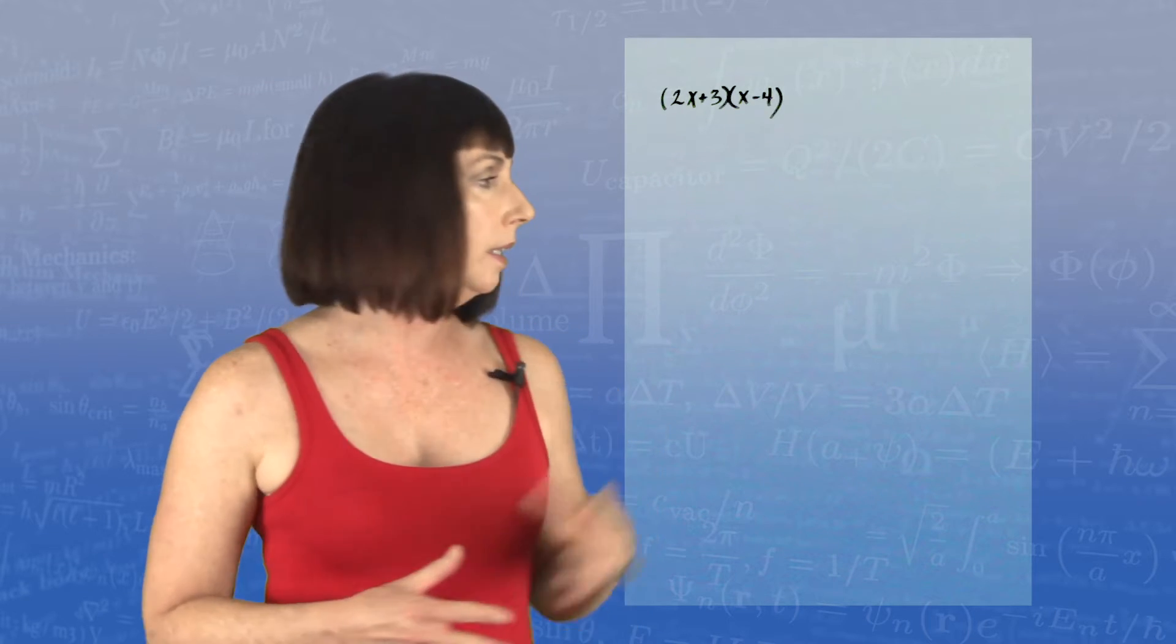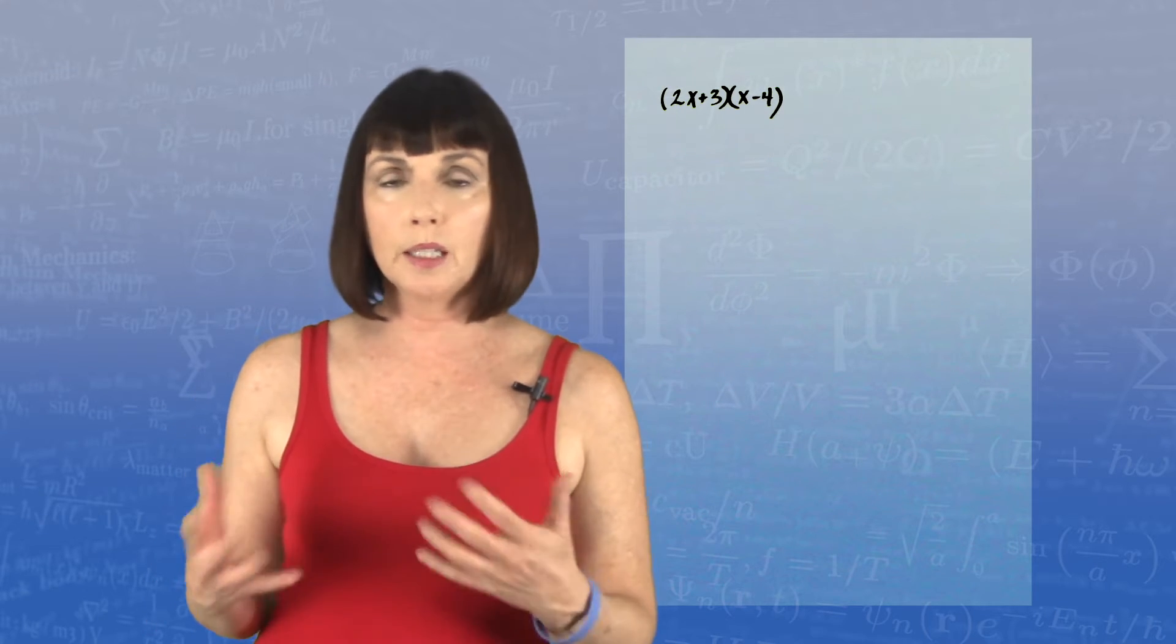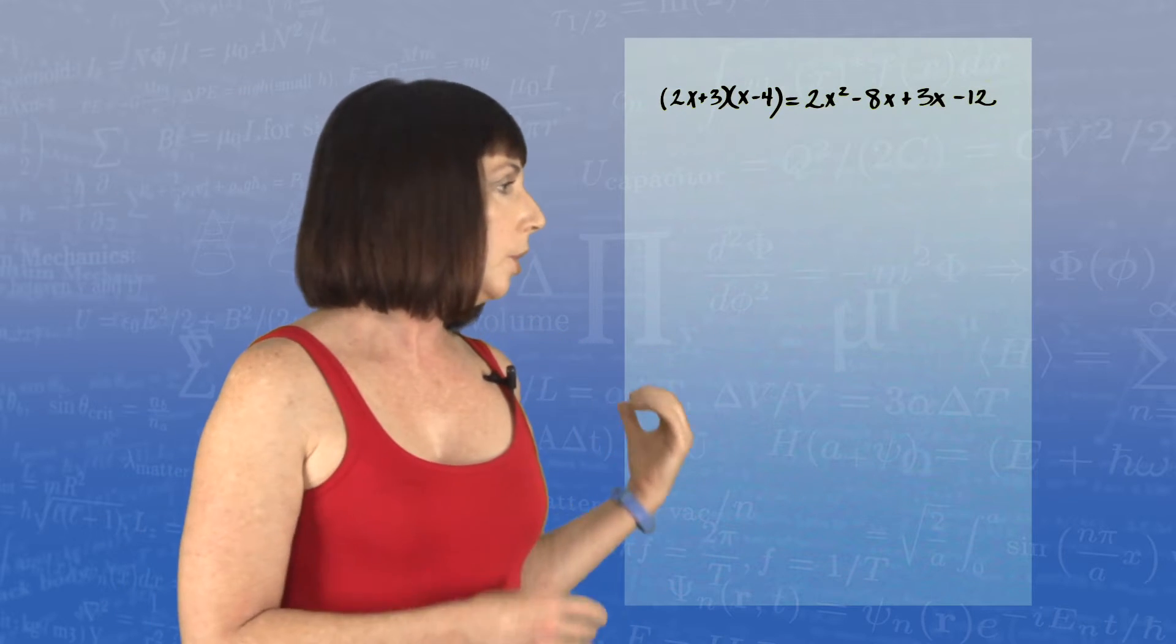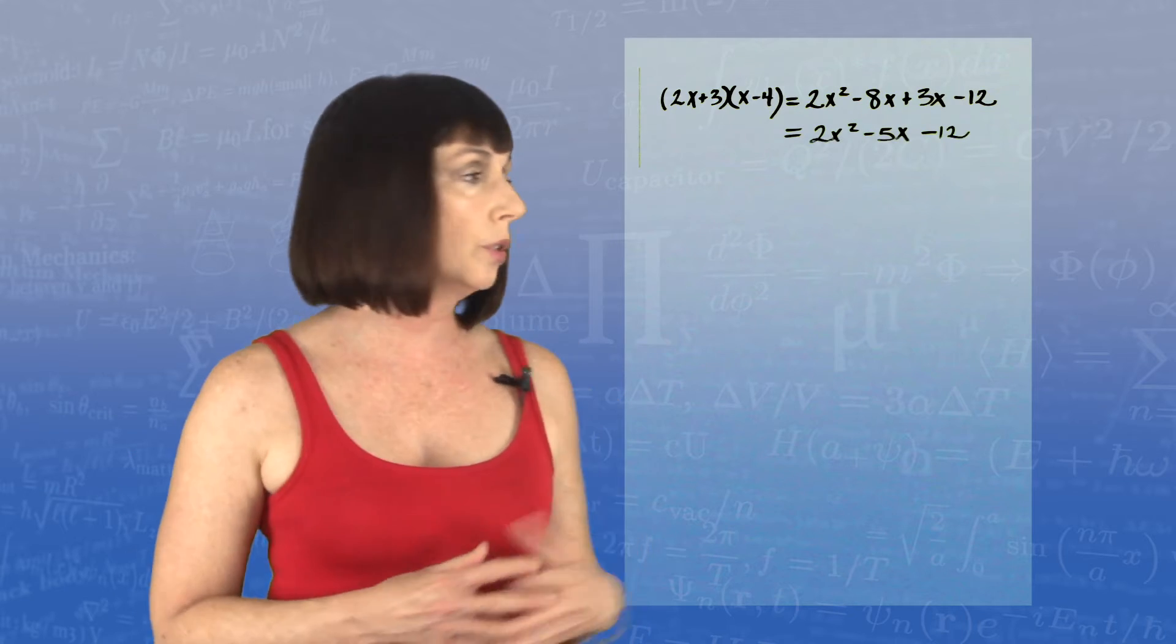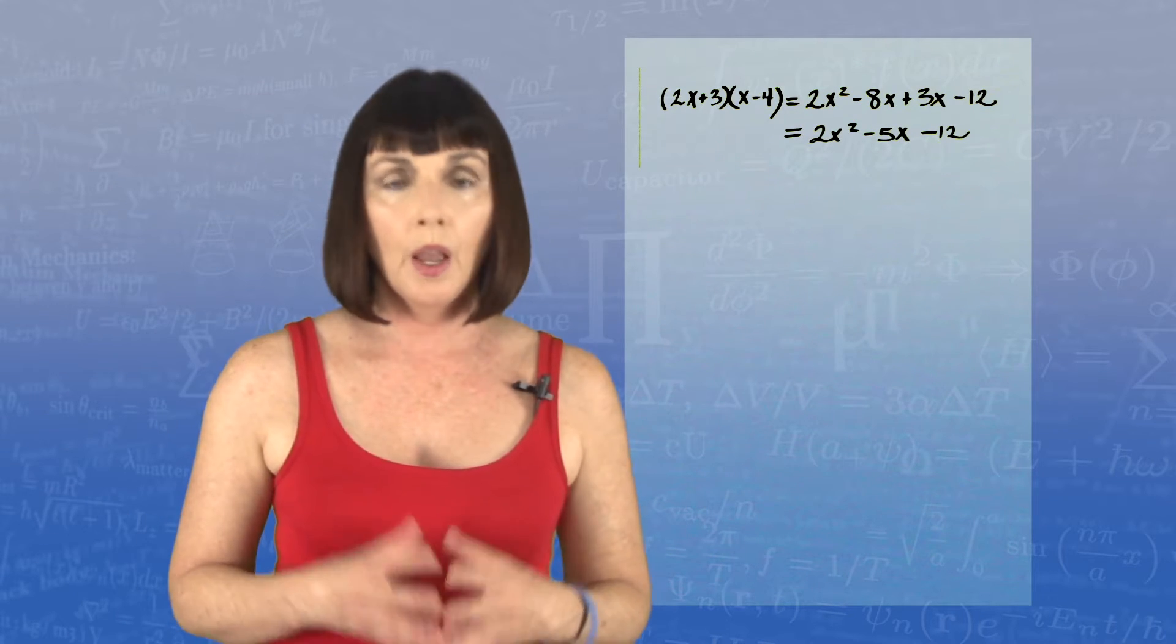If I take quantity 2x plus 3 times quantity x minus 4, multiply that out, I get 2x squared minus 8x plus 3x minus 12, which is equal to 2x squared minus 5x minus 12.